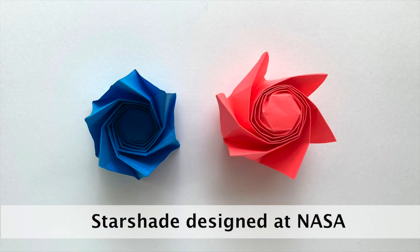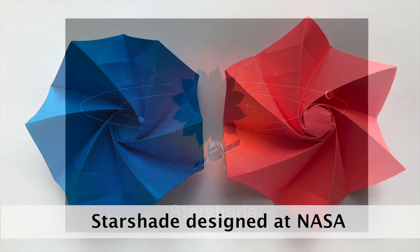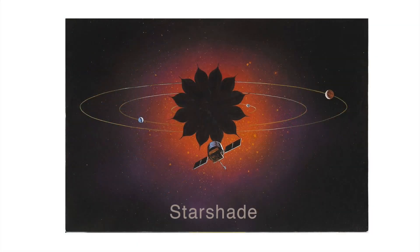This star shade is a model of an actual device NASA is developing. This is an artistic vision of the star shade, which is the flower-shaped object in the center. It is designed to block the light of nearby stars in order to observe their orbiting exoplanets.